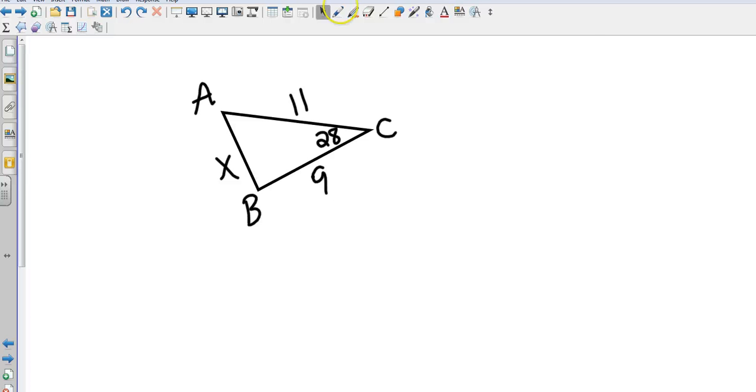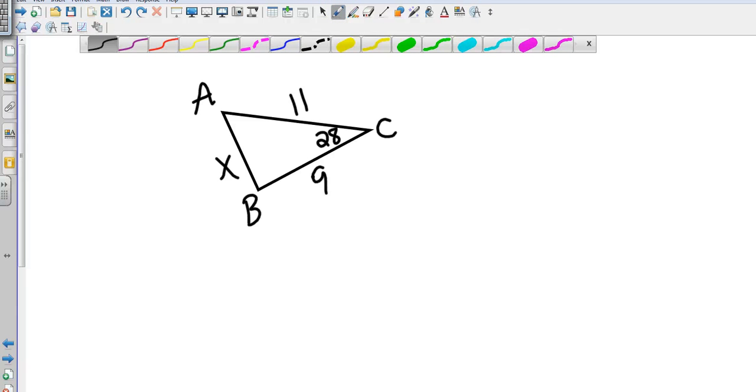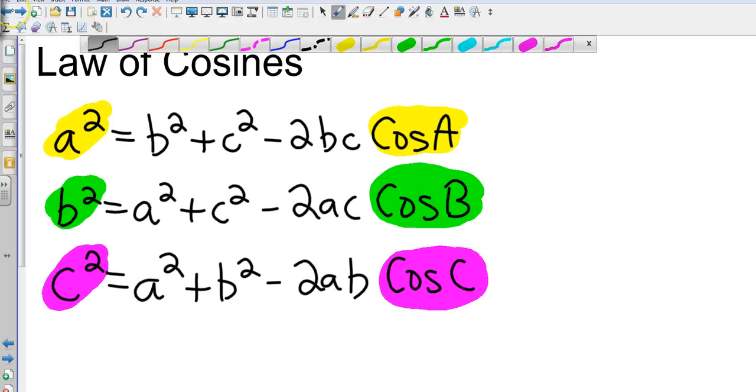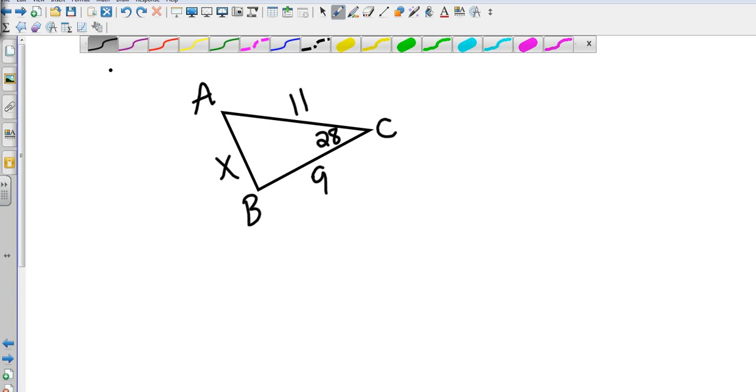In this case I've been given a couple of sides and one angle. So since I've been given the angle c, then I'm going to go back and I'm going to look at the third one, which is my c².